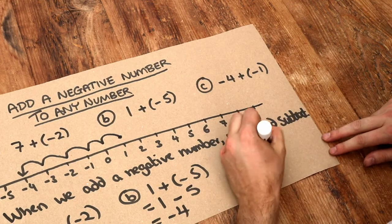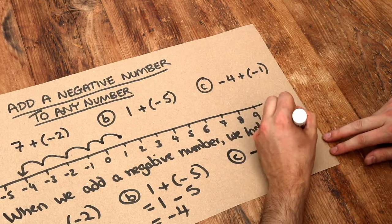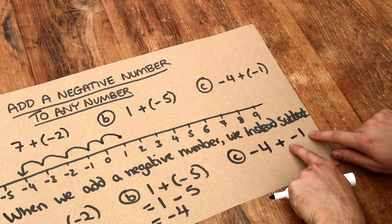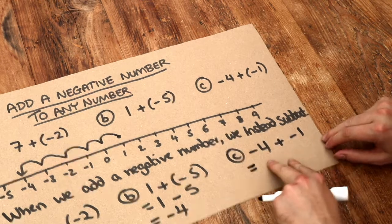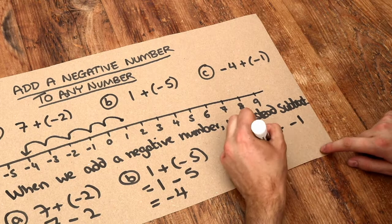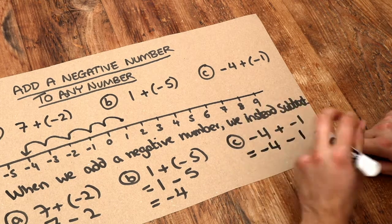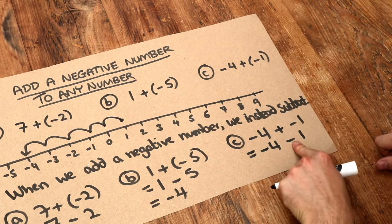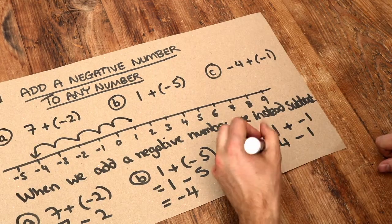Part C: we've got minus 4 and we're adding negative 1. I'm not going to bother writing the brackets this time. As per the advice before, we could turn that plus and minus symbol into a single minus, because when we add a negative number, we instead do a subtraction, but with that as a positive number.